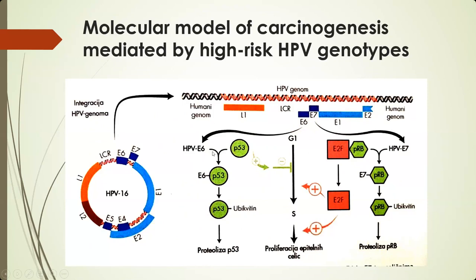Viral protein E6 binds to a three-part complex with P53 and ubiquitin, which causes proteolysis of P53. We know that P53 is known as the guardian of our genome. Viral protein E7 will bind to tumor suppressor gene PRB and ubiquitin and will cause proteolysis of PRB. It will also disconnect the complex between E2F, which will lead to loss of its function and to proliferation of epithelial cells and ultimately malignant transformation.